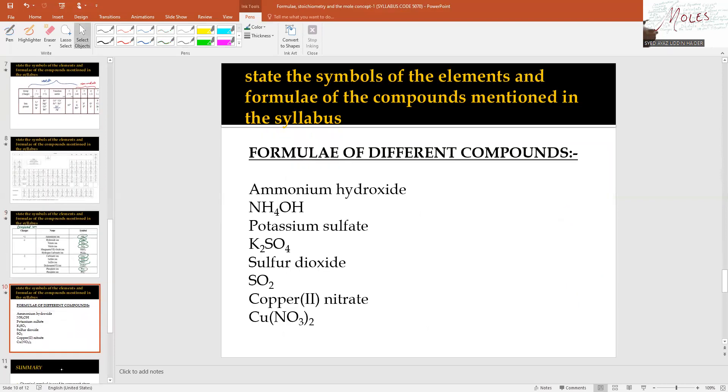These will help you in predicting formulas. Examples include: ammonium hydroxide NH4OH, potassium sulfate K2SO4, sulfur dioxide SO2, and copper nitrate Cu(NO3)2.